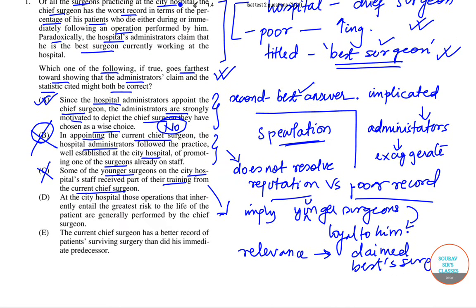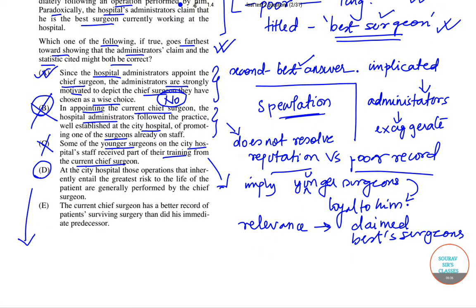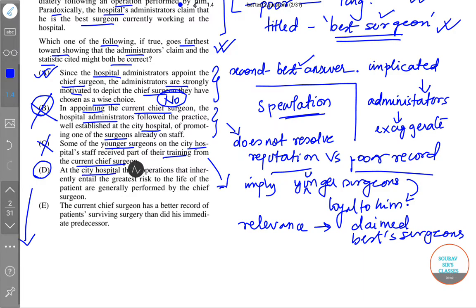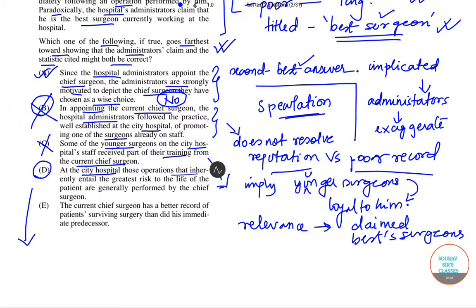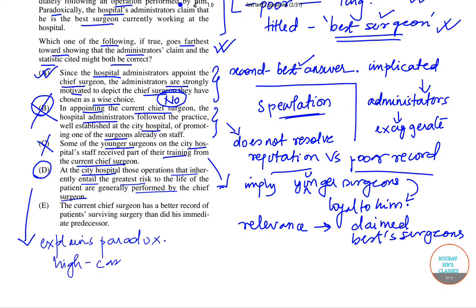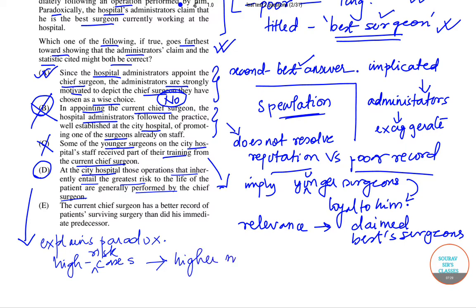Option D says: at city hospital, those operations that inherently entail great risk to the life of the patient are generally performed by the chief surgeon. This actually fully explains the paradox very well. That means if the chief surgeon is assigned high-risk cases, it is to be expected that he would have a higher number of patients die, because it involves a high amount of risk.